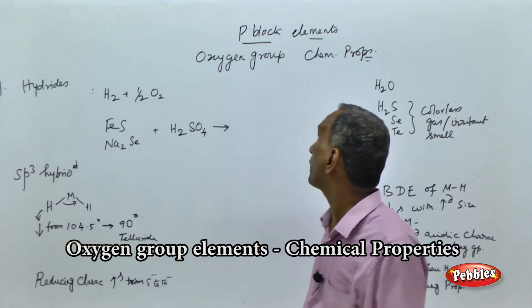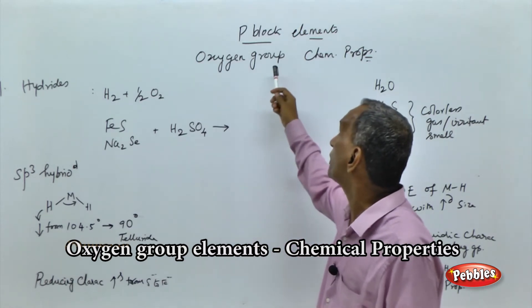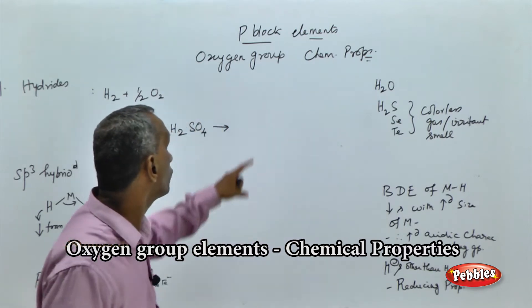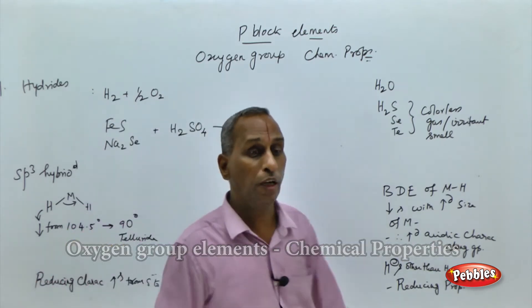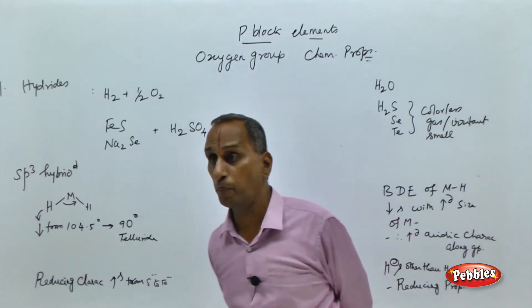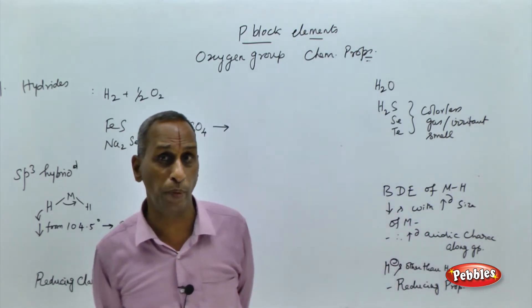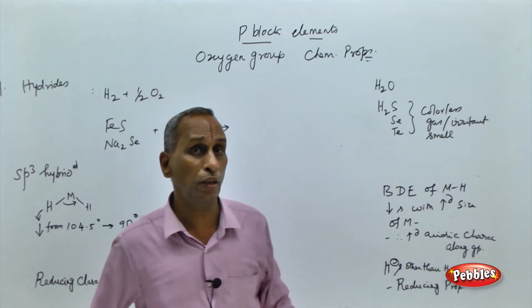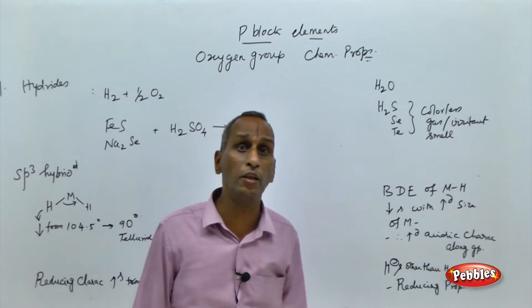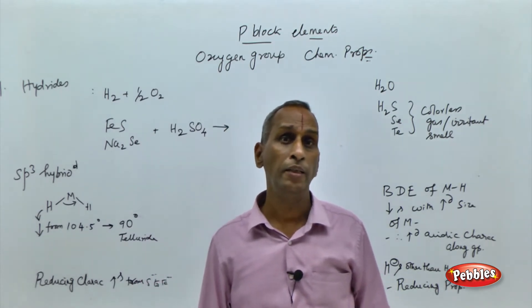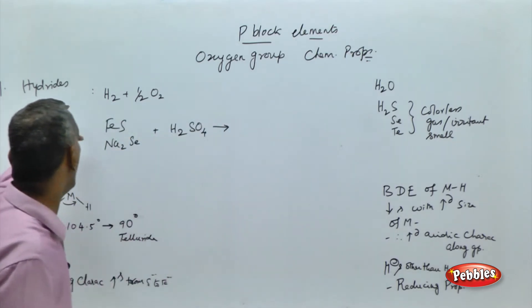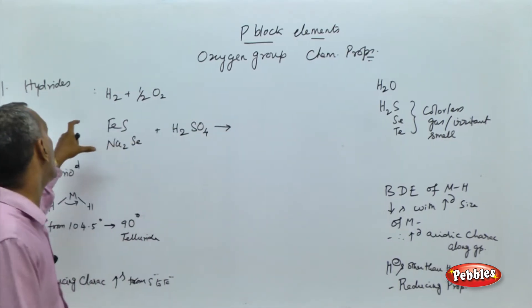Now, we will see the aspects of oxygen group elements of the P block group and their chemical properties. Important P block elements are divided into groups: carbon group, nitrogen group, oxygen group, etc. Now we are looking at the oxygen group. Oxygen group elements are oxygen, sulfur, selenium, and tellurium. Their chemical properties are discussed.